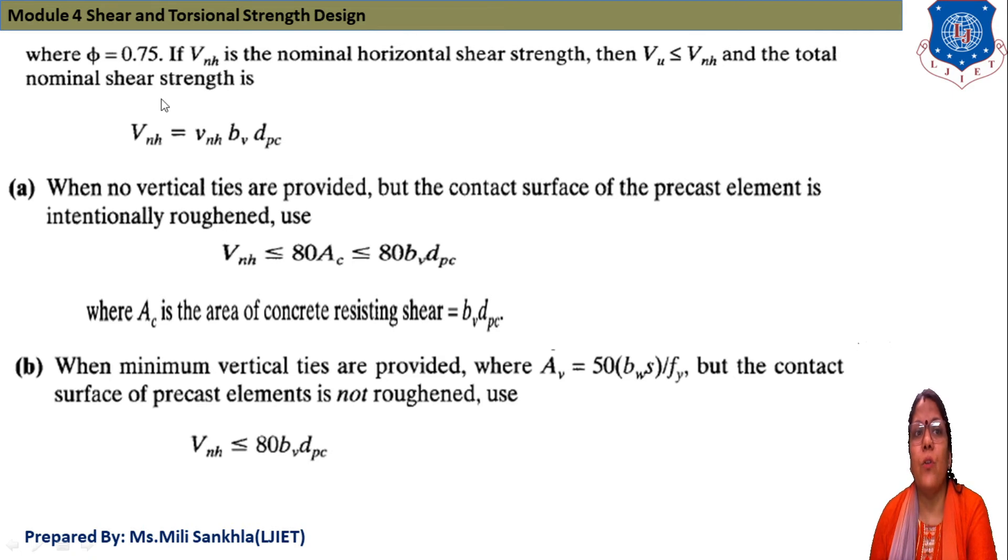When no vertical ties are provided but contact surface of precast element is intentionally roughened, use Vnh ≤ λtAc/(bv·dpc), where Ac is the area of concrete resisting the shear, and this area is bv × dpc, meaning critical depth of prestressing steel.